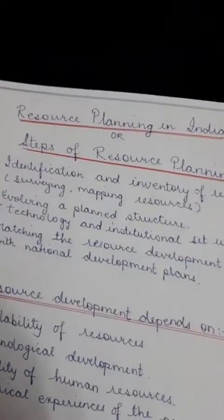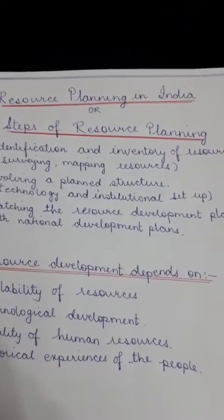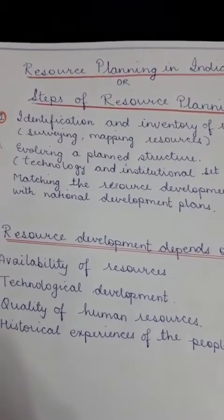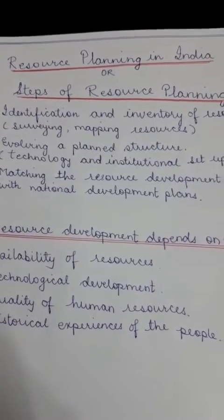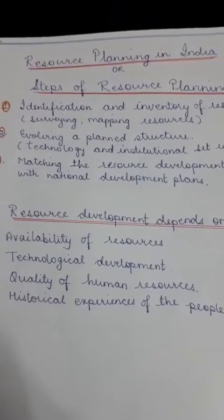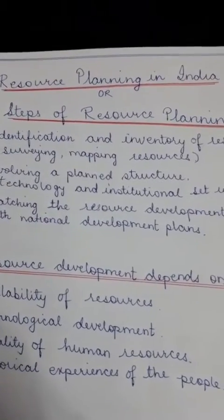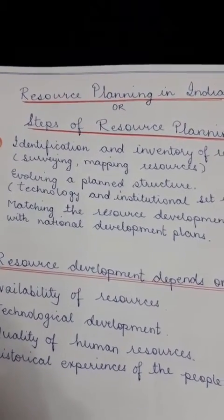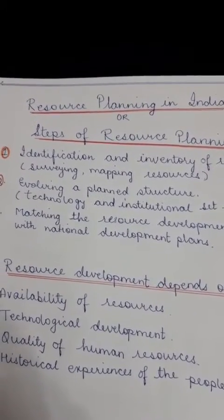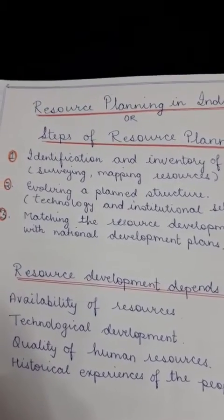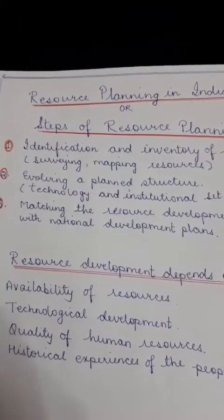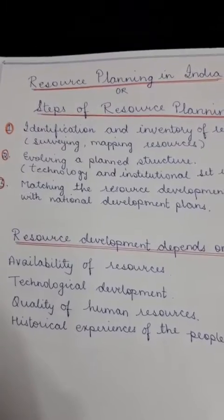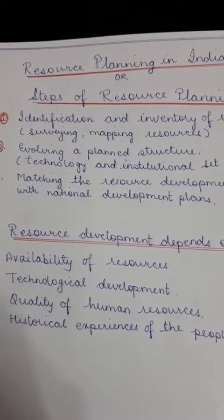Resource planning in India involves three major steps. The first step is identification and inventory of resources, which involves surveying and mapping of resources — knowing where your resources are, what is the quantity, what is the quality, and where they lie.